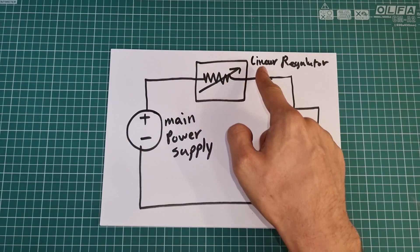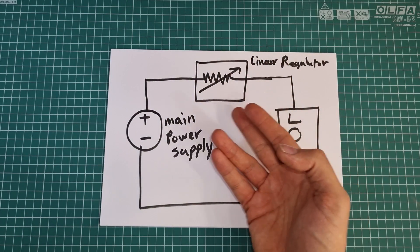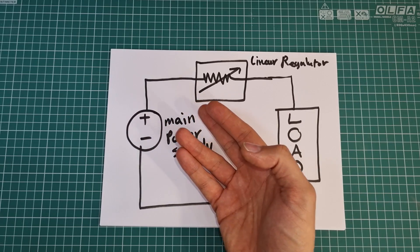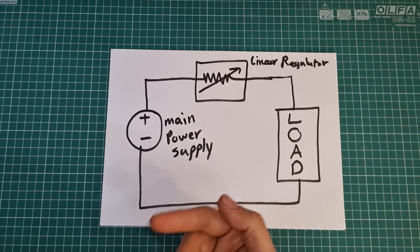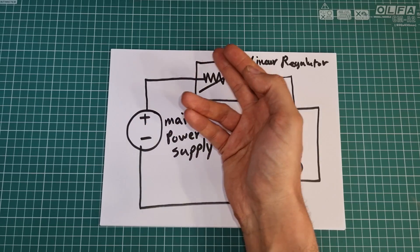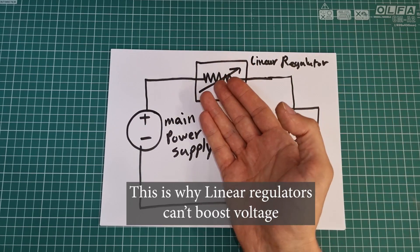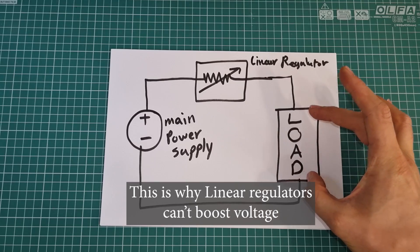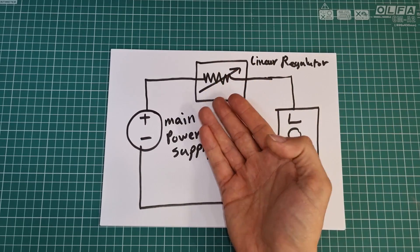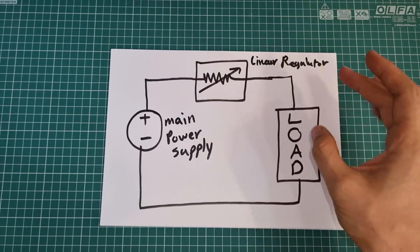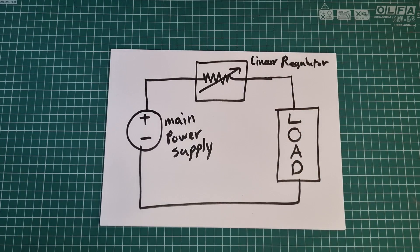This is not the symbol of a linear regulator, but I use it because it makes it easy to understand how linear regulators work. A linear regulator is like a variable resistor which decreases its resistance when the load needs more current, and increases its resistance when the load needs less current, to keep the voltage on the load fixed.